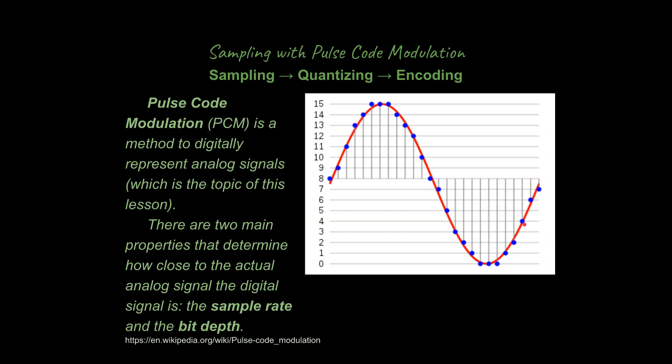And then based on that, we're finding the amplitude of the wave at that point, and rounding it off to the nearest quantized value. Now I do want to mention that's how close you get with the digital data compared to the actual wave depends on two things.